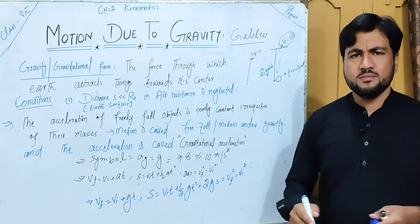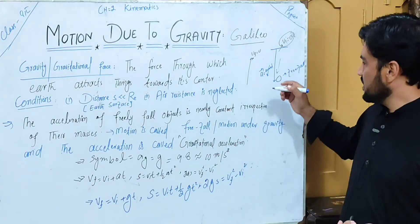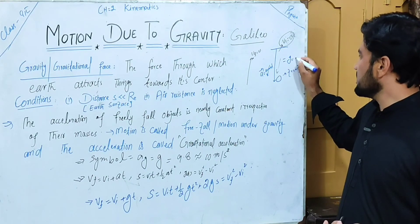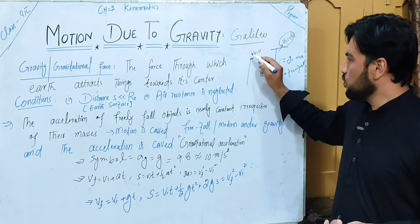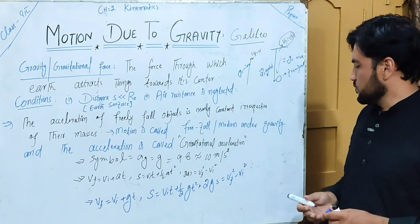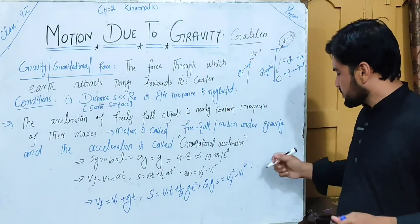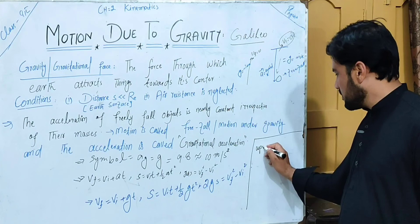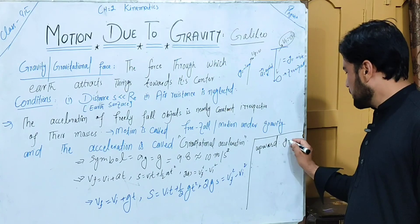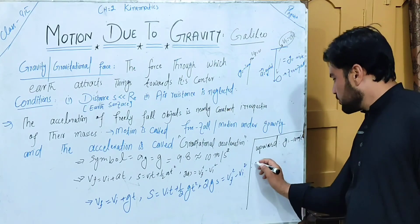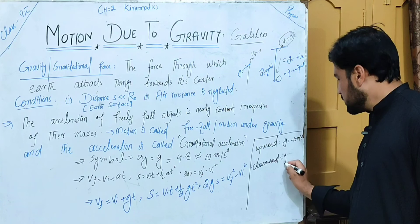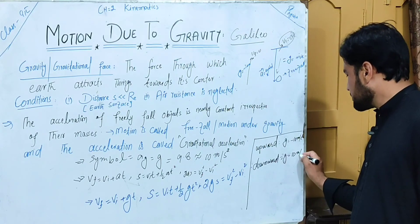An important point: g can be positive or negative. If the object has downward motion, the g value is positive — approximately +10 meters per second squared. If the object has upward motion, the g value is negative — approximately −10 meters per second squared.